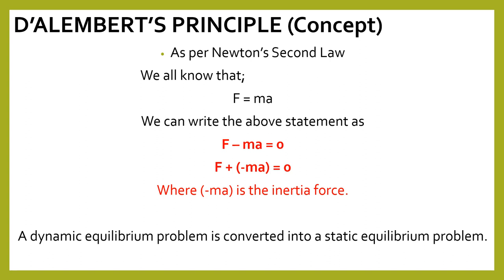Ultimately, the concept of D'Alembert's Principle is used to convert a dynamic equilibrium problem into a static equilibrium problem. The basic concept is you should remember two things: the force responsible for the motion of the body, and the inertia force which is minus ma. From the equation F minus ma equal to 0, we conclude that F and ma are both in opposite directions.